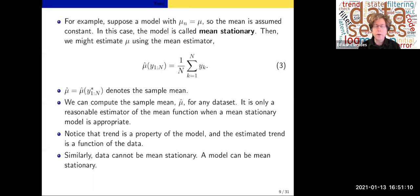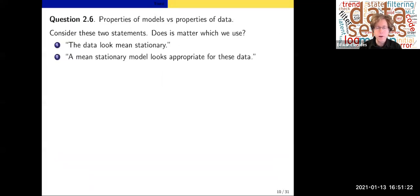Whereas trend is a property of the model, estimated trend is a function of the data which only really estimates the trend if the trend model is reasonable. Similarly, when we're trying to be careful with words, data can't be mean stationary; only a model can be mean stationary. Stationarity is a property of models. So let's think through this question.